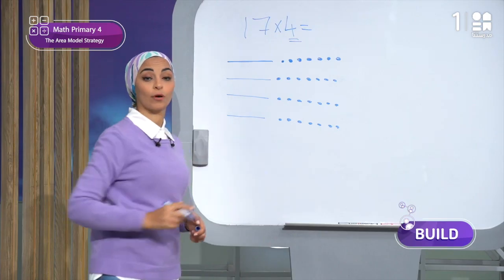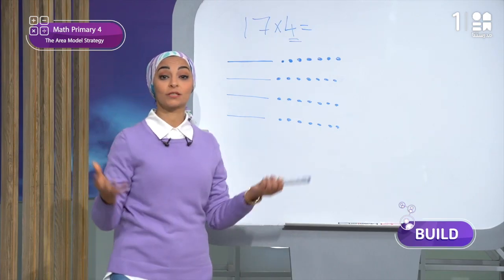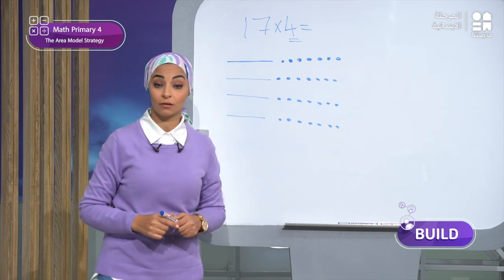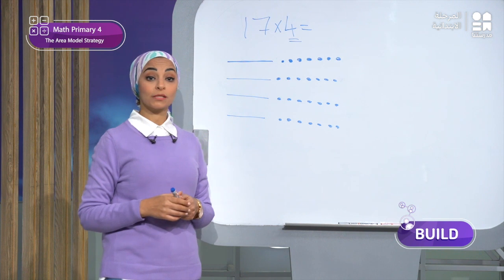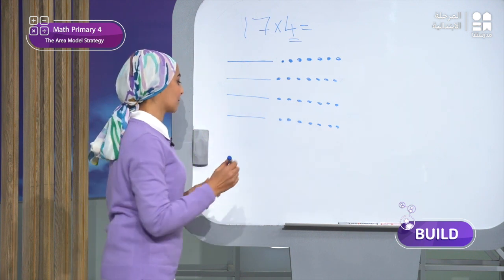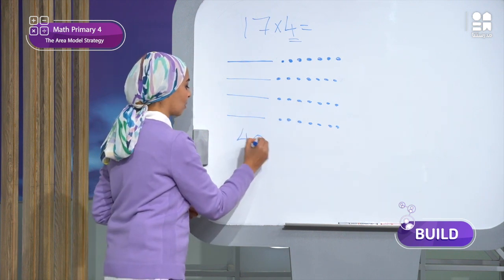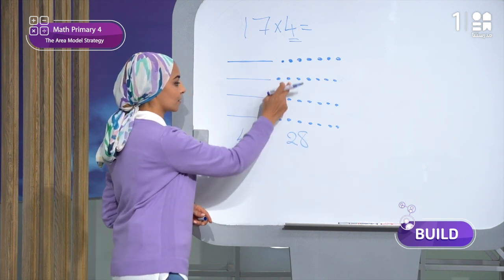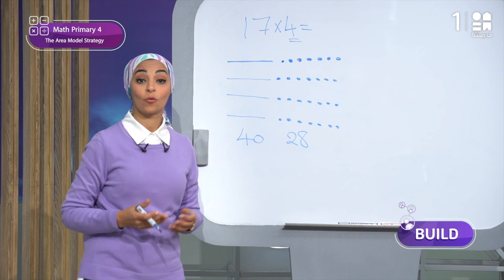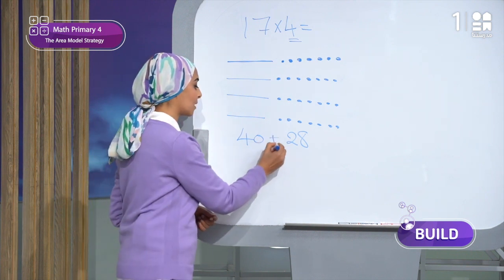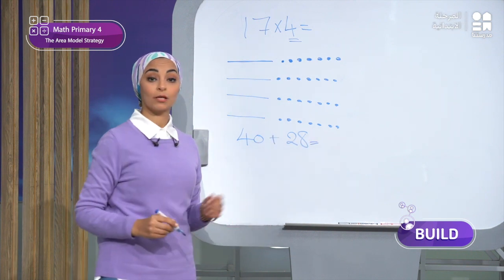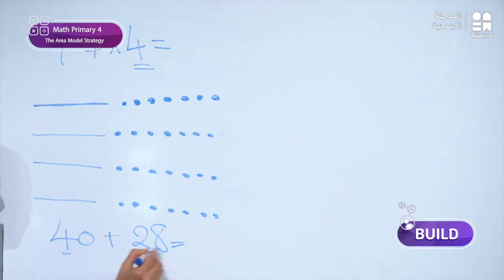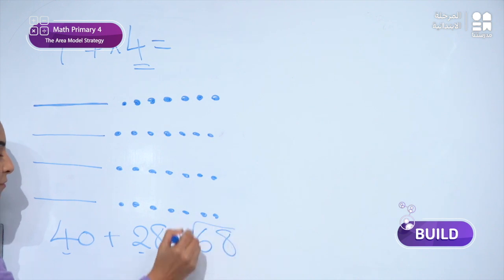I've now repeated the row 4 times. To find the total number, we count the tens: here I have 40. Then count the ones: here I have 28. So I will add 40 plus 28, which gives me 68.